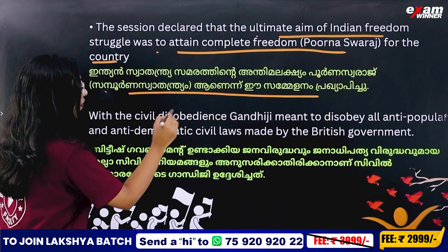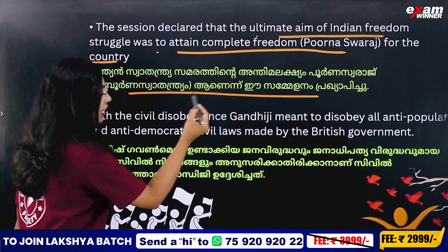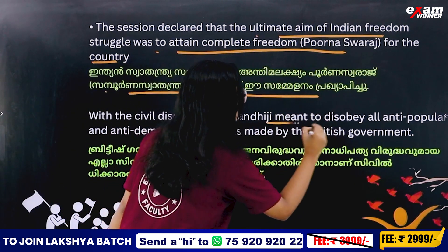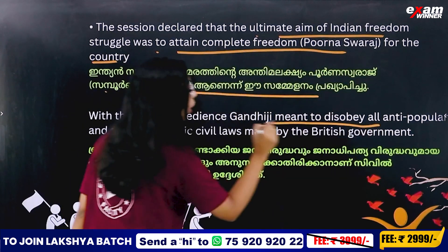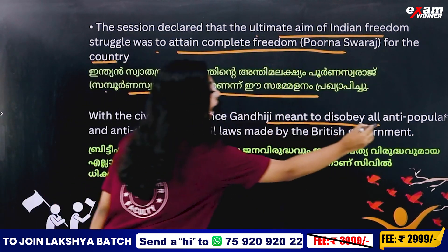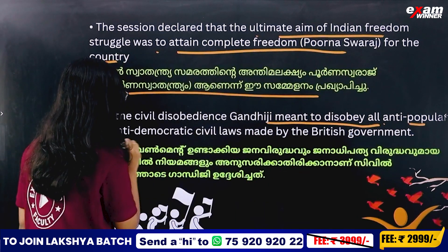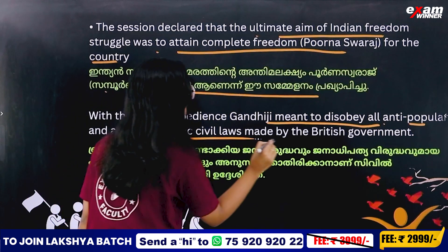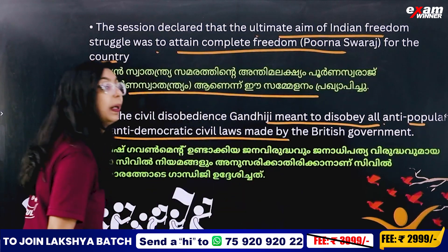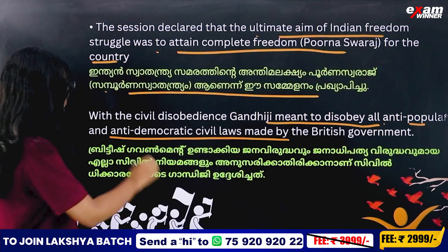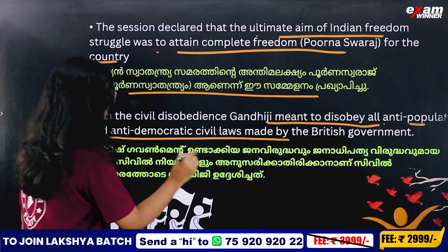With civil disobedience, Gandhiji meant to disobey all anti-popular and anti-democratic civil laws made by the British government.